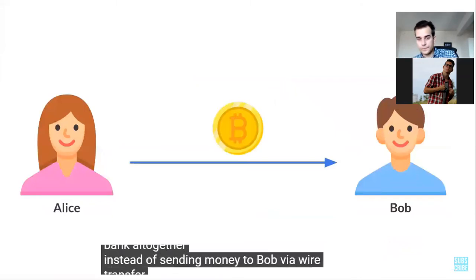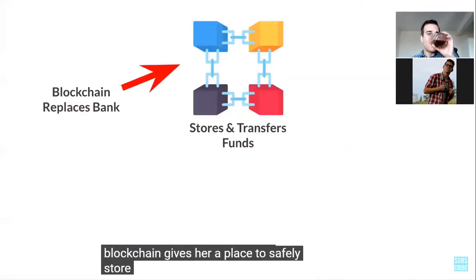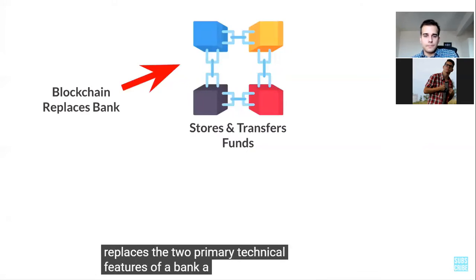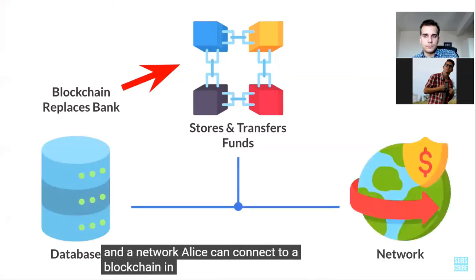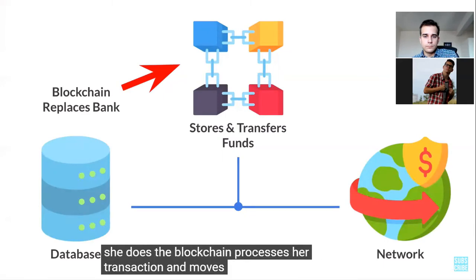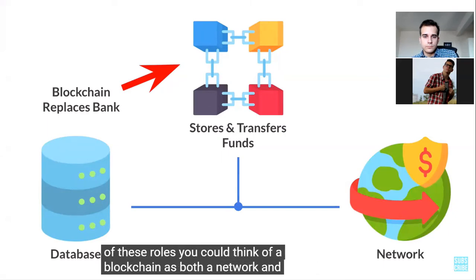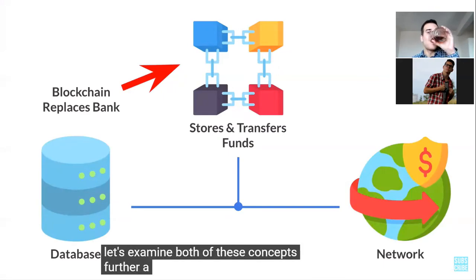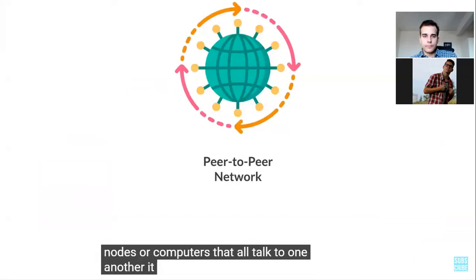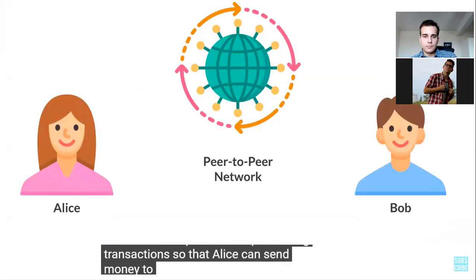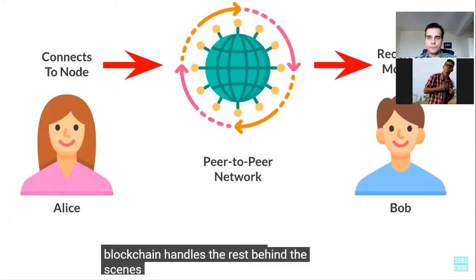Much like a bank, the blockchain gives her a place to safely store her funds and send money to Bob. It replaces two primary technical features of a bank: a database — it also keeps track of how much money Alice has — and a network — Alice can connect to a blockchain in order to send money. When she does, the blockchain processes her transaction and moves the funds from her account to Bob's. You can think of a blockchain as both a network and a database at the same time.